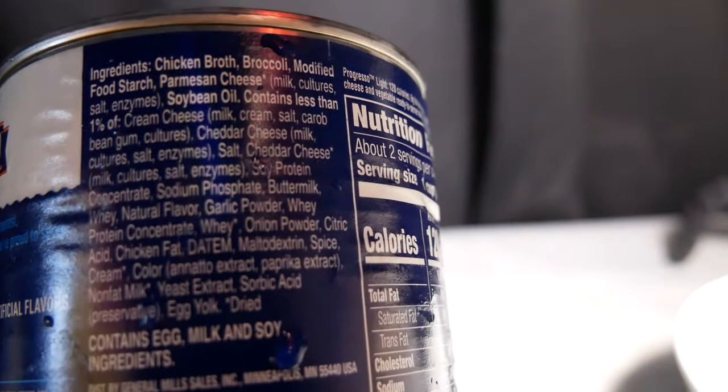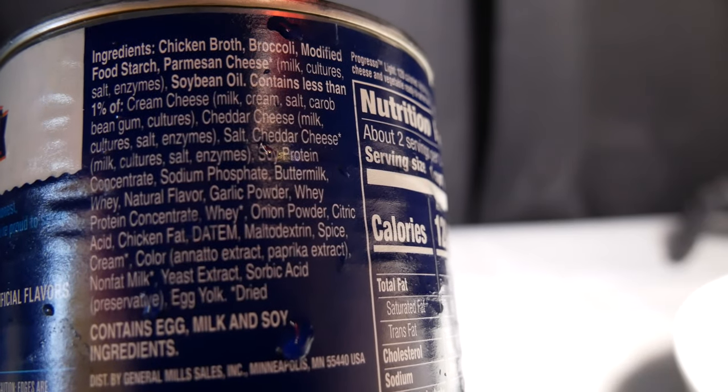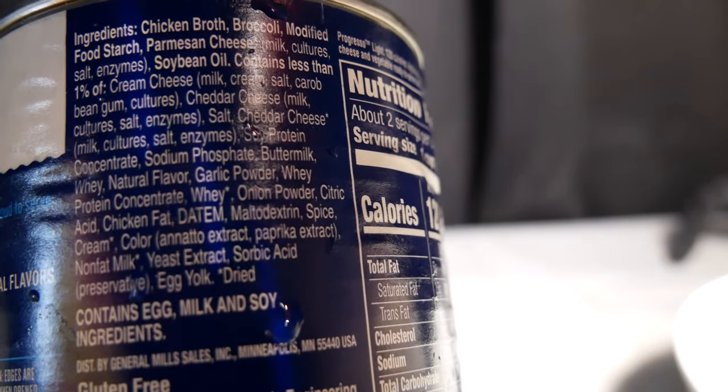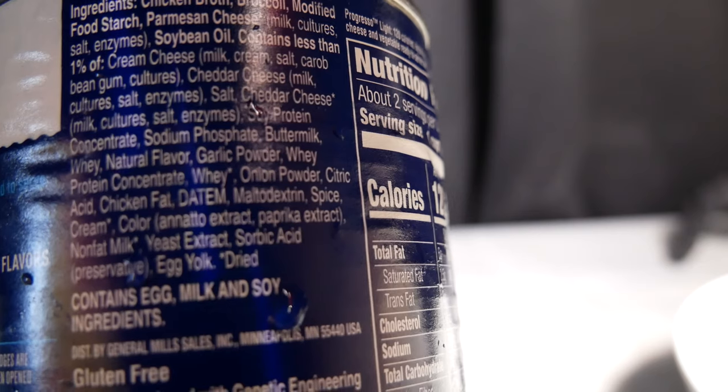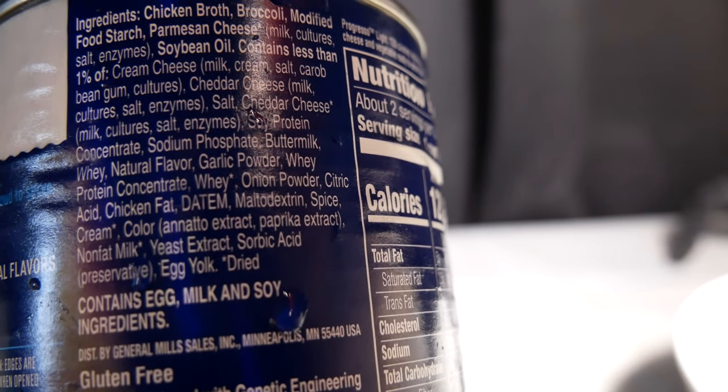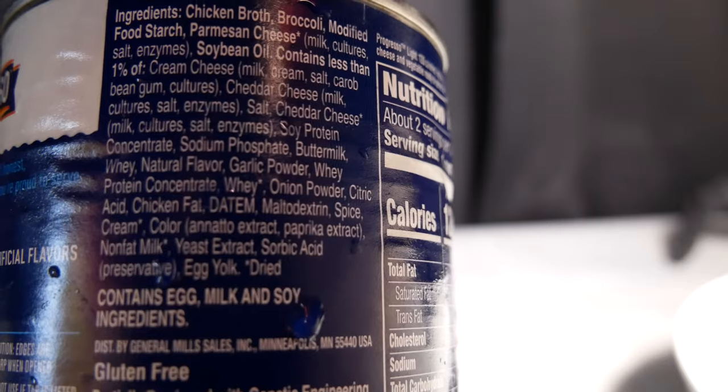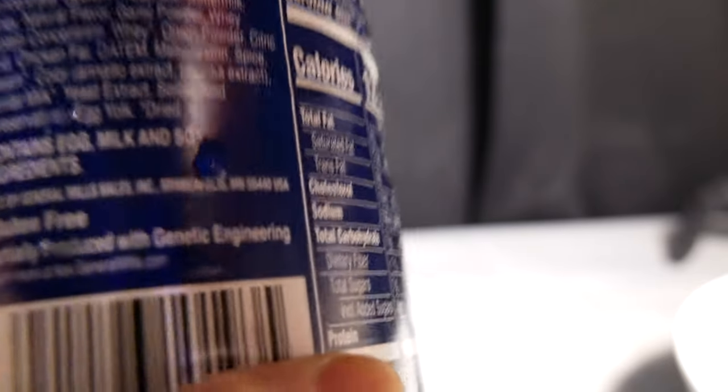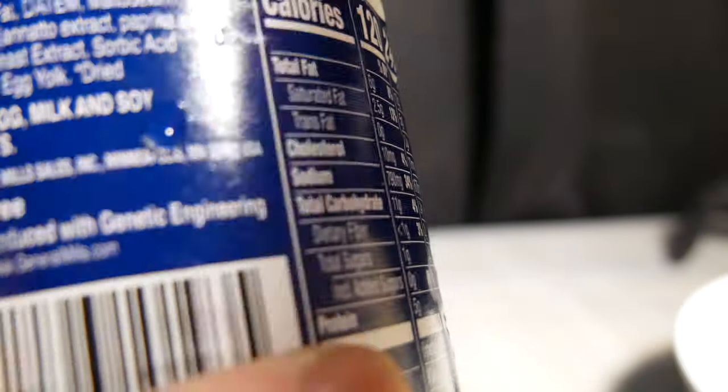Cheese, soybean gum, cream cheese, cheddar, salt, soy protein concentrate, sodium phosphate, buttermilk, whey, garlic powder, whey protein. This seems to have a lot of very natural ingredients unlike some other things, but I am trying to buy healthier stuff.